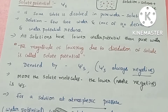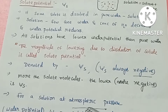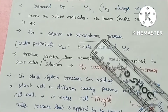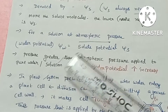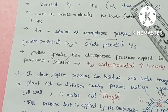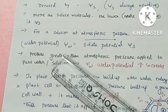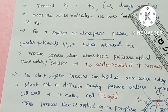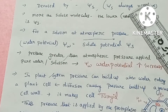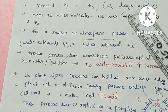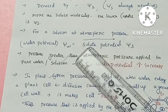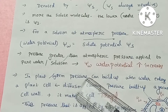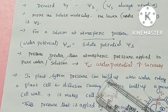Consider a solution at atmospheric pressure. For a solution at atmospheric pressure, the solute potential is equal to the water potential. If we increase pressure greater than atmospheric pressure, that affects the water potential.